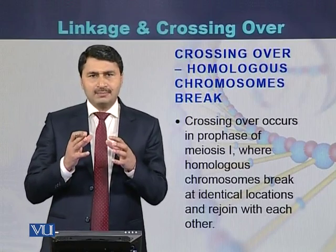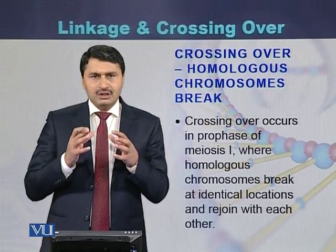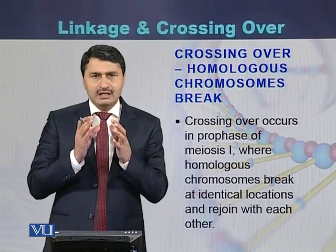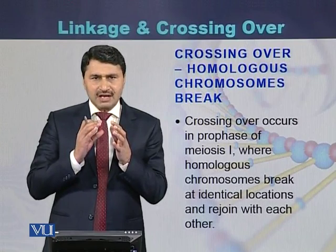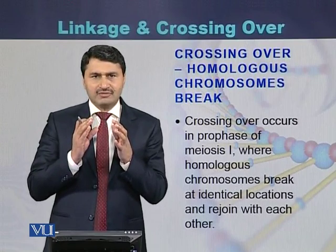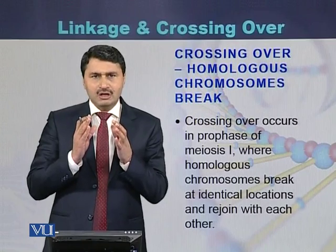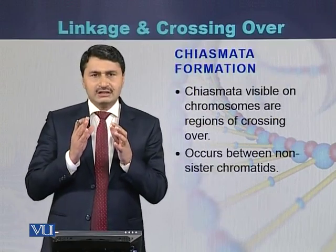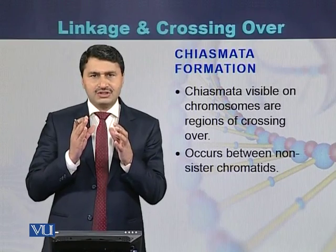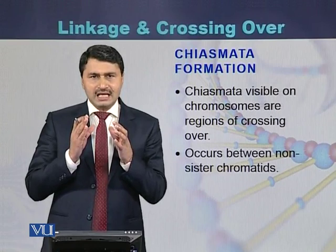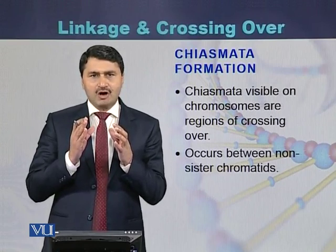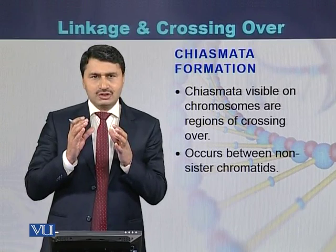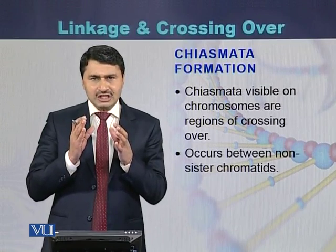Crossing over is a phenomenon that takes place during meiosis I. During meiosis, homologous chromosomes align with each other. During this alignment, homologous chromosomes exchange fragments of chromatids — this exchange is between the non-sister chromatids of the homologous pair. This exchange of gene-containing fragments is called chiasmata. Chiasmata formation looks like the symbol X or a cross, representing that fragments of non-sister homologous chromosomes are exchanged.